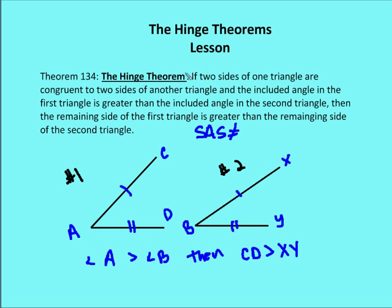Again, if two sides of one triangle are congruent to two sides of another, and the included angle in the first is greater than the included angle — remember, the included angle is that angle sandwiched between the two sides — then the remaining side of the first triangle, the side that's open, is going to be greater than the remaining side of the second triangle.